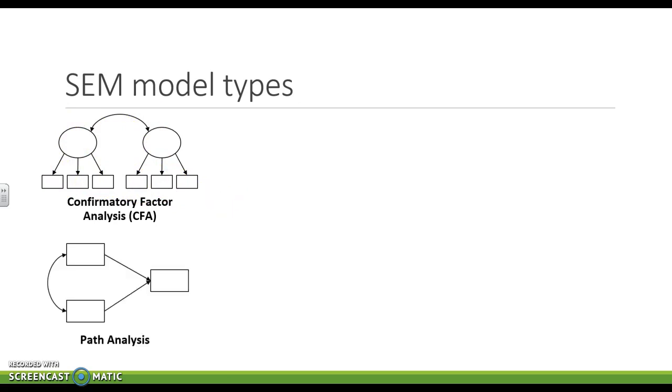We can do path analysis. So these are observed variables. They are not latent. And we have two observed variables predicting a third observed variable.